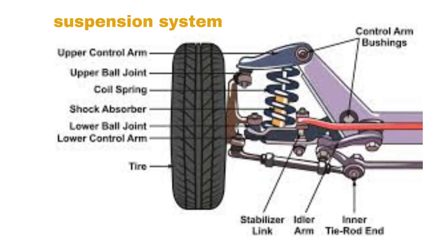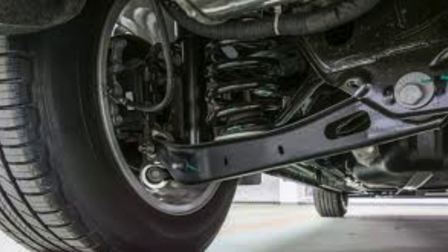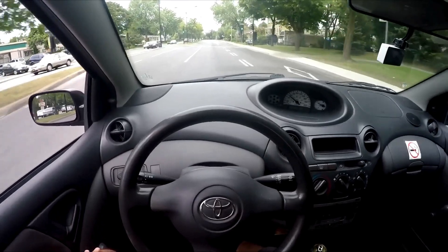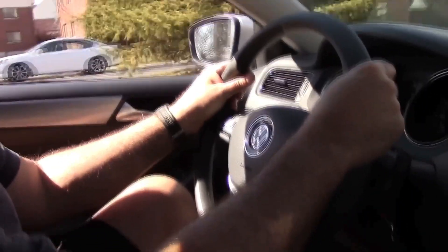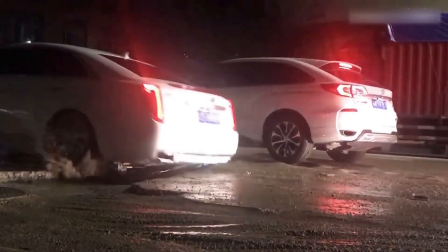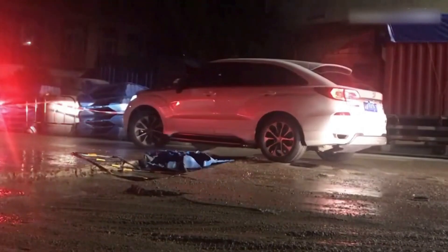The suspension system in a vehicle is a critical component designed to absorb shocks, support the vehicle's weight, and ensure that the wheels maintain consistent contact with the road. It plays a crucial role in both vehicle handling and passenger comfort. The suspension system allows the vehicle to adapt to road conditions, making it possible to drive smoothly and safely on uneven surfaces, bumps, or curves.